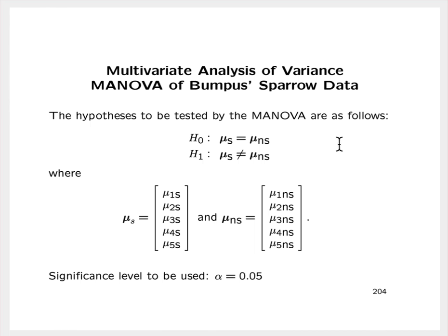The hypotheses to be tested by the multivariate analysis of variance are as follows. The null hypothesis is that the mean vector for the survivors is equal to the mean vector for the non-survivors, and the alternative is that the mean vector for the survivors is different from the mean vector of the non-survivors. The mean vector for the survivors consists of the five means of the morphological measurements for birds from the survivor group. Likewise, the mean vector for non-survivors consists of the means of the five measurements for birds from the non-survivor population. This test will be performed at a significance level of 5%.